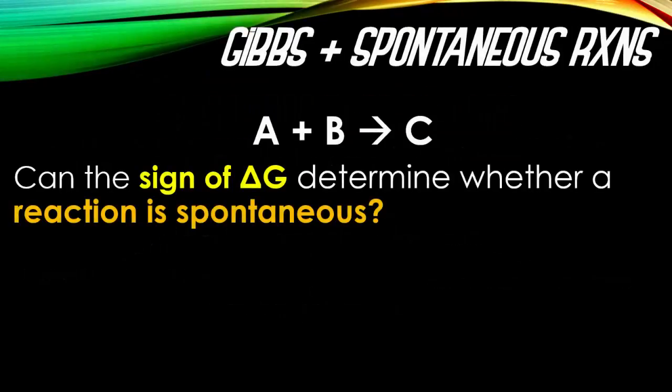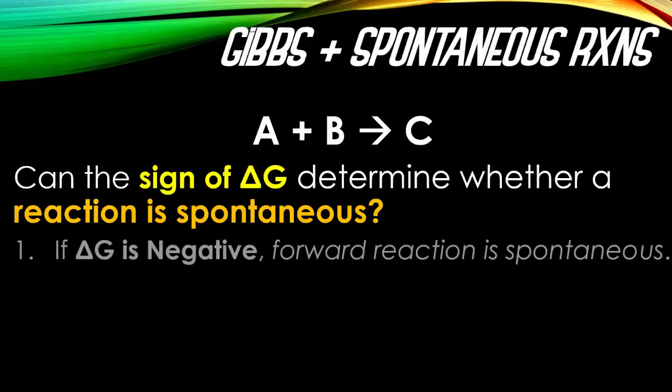The sign of delta G determines whether a spontaneous reaction can occur. For example, if A plus B gives you C, how can we determine if this reaction occurs spontaneously without extra energy from outside, or if it's non-spontaneous and requires a heat change? If delta G is a negative value — like negative 1, negative 2, etc. — the forward reaction is going to be spontaneous. That means A plus B will spontaneously make C.